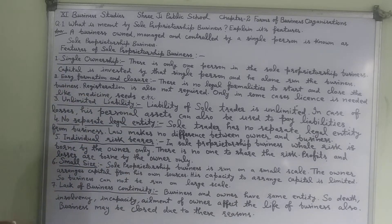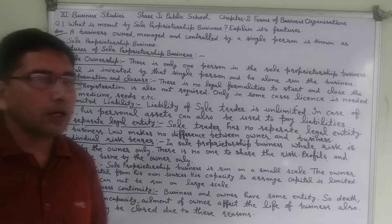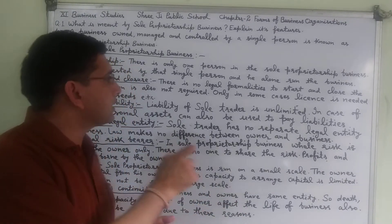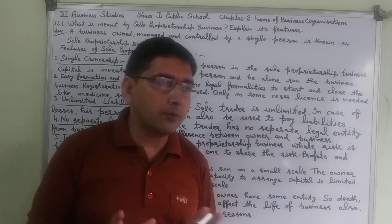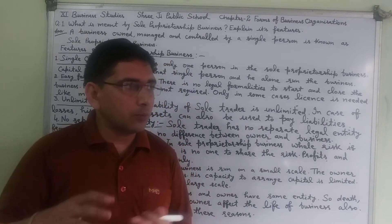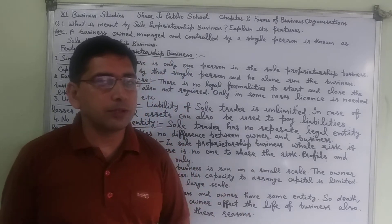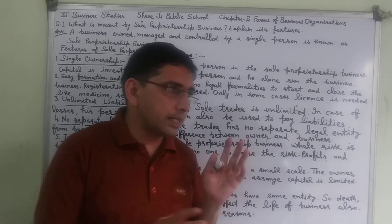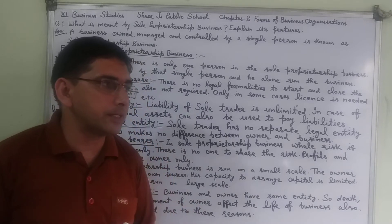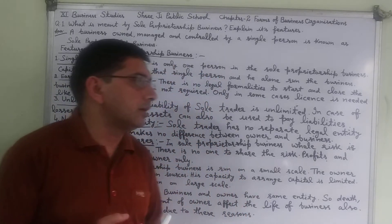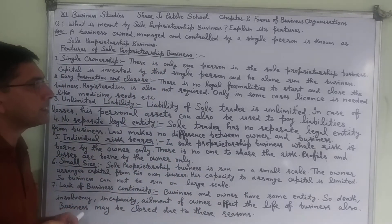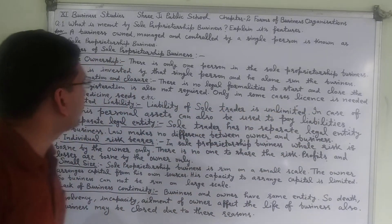The second feature is easy formation and closure. Formation and closure both are very simple in case of sole proprietorship business. There are no hard formalities to start or to close the business. It depends on the wish of the owner whether to start or to close the business. There is no legal formality, and no registration is required. Formation and closure are very simple.